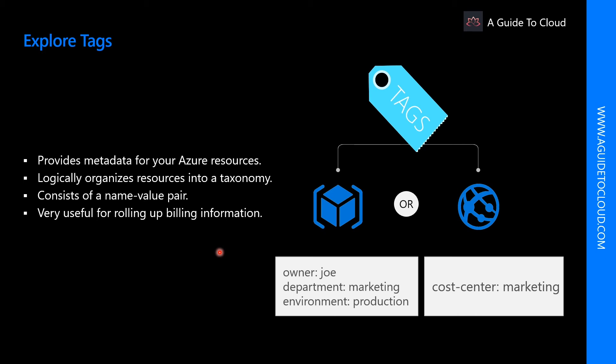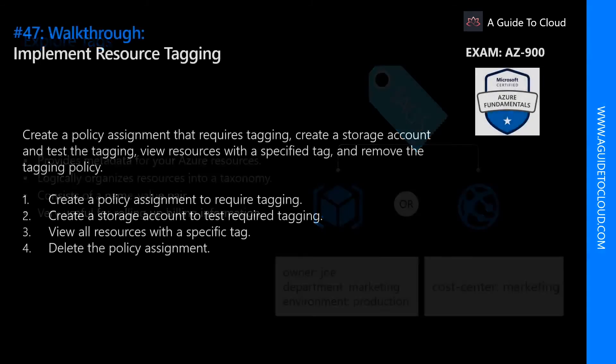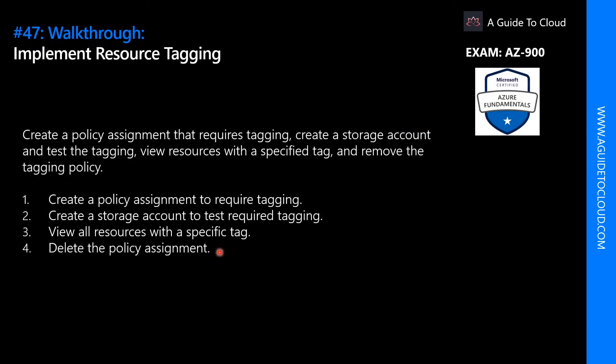The tag name is limited to 512 characters and the tag value is limited to 256 characters. Tags applied to a resource group are not inherited by the resources in that resource group. Now that we have learned the benefits and limitations of tags, let me show you how to apply tags and create policy assignments for tags in the Azure portal.